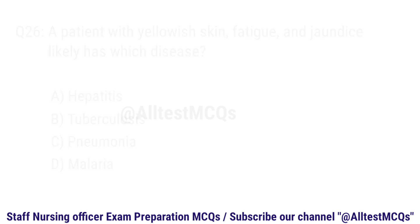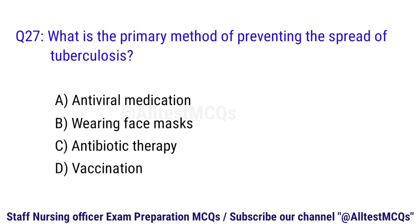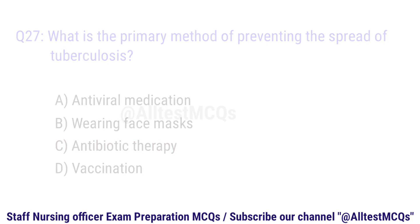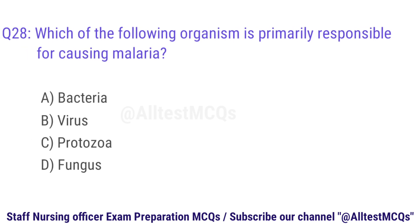Question 27. What is the primary method of preventing the spread of tuberculosis? The correct option is C. Antibiotic therapy.